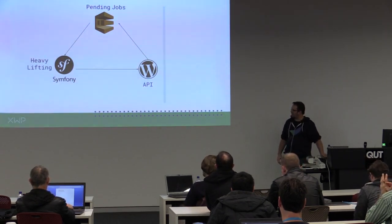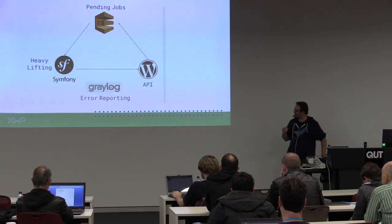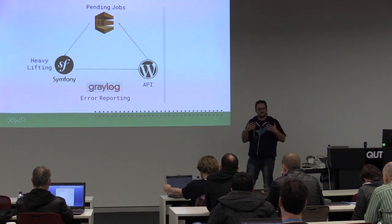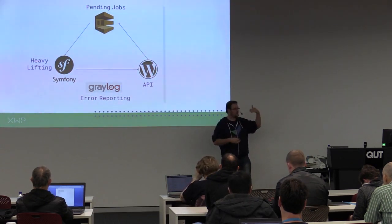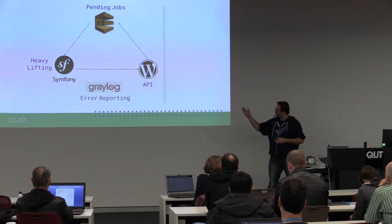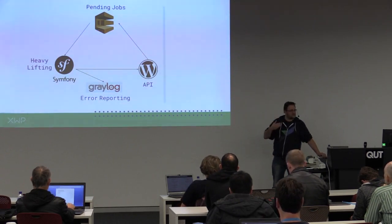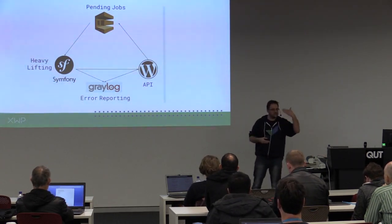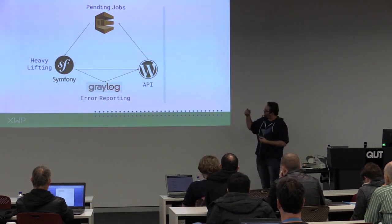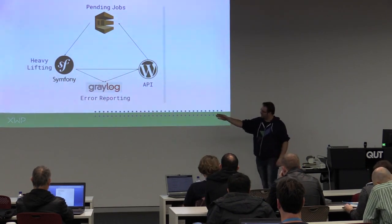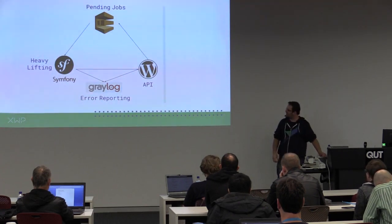With all of this happening, we needed to think about error reporting along the way. We ended up using Greylog — there's also Sumo Logger and other services we could use. We ran an instance of Greylog for error reporting, and any errors detected along the way get written to Greylog so we can monitor anything that goes wrong inside the API. We actually leveraged the API of Greylog and wrote from WordPress to Greylog, which made it a little bit easier.